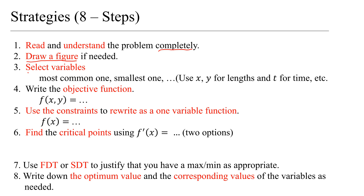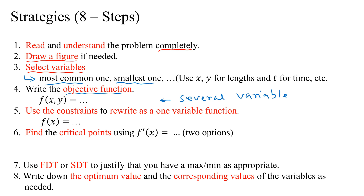After that, you select variables. There are some strategies — normally we pick the most common or the smallest one to avoid fractions, using x, y, t, and so on. Then the most important step is to write the objective function. At first, the objective function will have multiple variables, but since you don't know how to find the optimal value of a multivariable function yet, you're going to use the constraints to rewrite the function as a one-variable function. This step is very important.